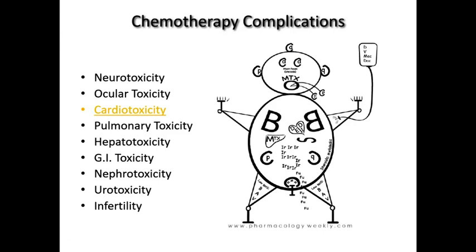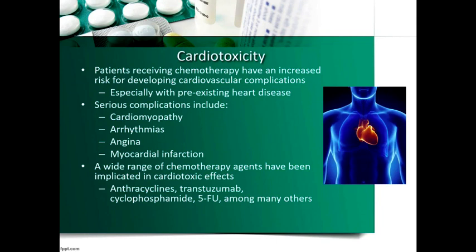Cardiotoxicity — in chemo man's heart we see D, E, D, and I: doxorubicin, daunorubicin, epirubicin, and idarubicin. Those are the big four anthracyclines that can cause cardiotoxicity. Patients at higher risk include those with pre-existing heart disease. Complications include cardiomyopathy, arrhythmias, angina, and myocardial infarction. Anthracyclines are the clear favorite for cardiotoxicity. Trastuzumab (Herceptin), cyclophosphamide, and 5-FU can also cause these effects.